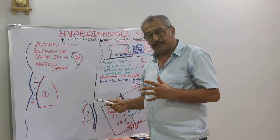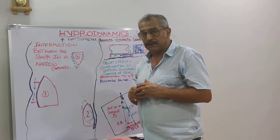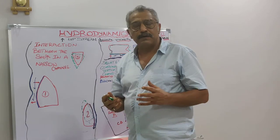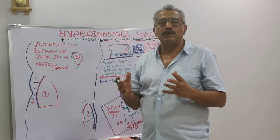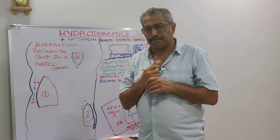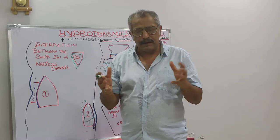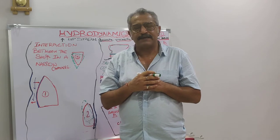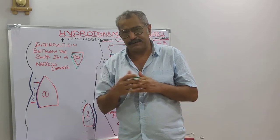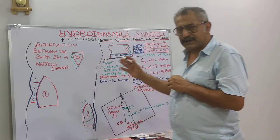I hope I've been able to make this clear. Before I explain the bow cushioning effect, we need to understand a few basics. I will be coming back to the bow cushioning effect in an extensive manner in my next lecture. Prior to that, we will shift to the right side of the board and look at what is happening in the narrow channels.